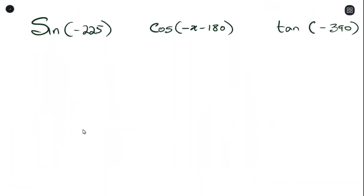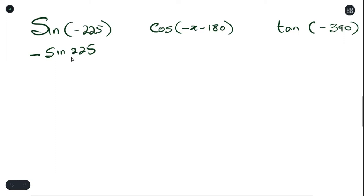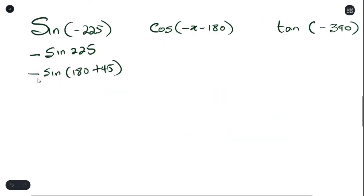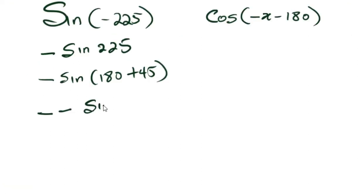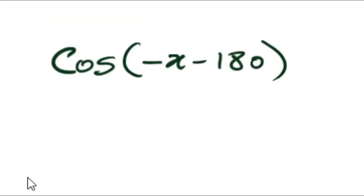Here are some examples of negative angles. First, sine of negative 225. The first step is to treat it like it's in the fourth quadrant, so this becomes negative sine 225. The second step is to figure out which quadrant 225 falls in — it falls in the third quadrant, so we use the third quadrant formula. Then using the reduction formula, since sine is negative in the third quadrant, this becomes negative negative sine 45, which simplifies to positive sine 45. Since 45 is a special angle, you break that down for your final answer.